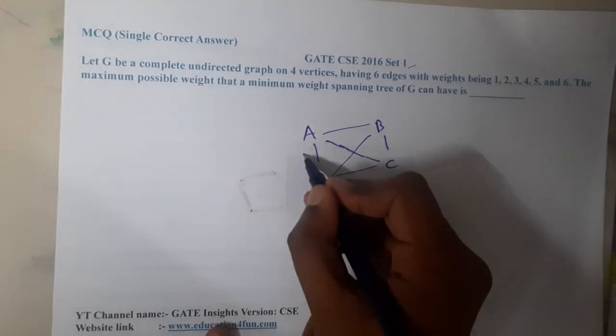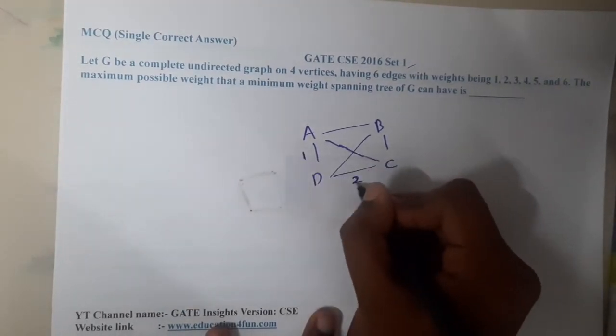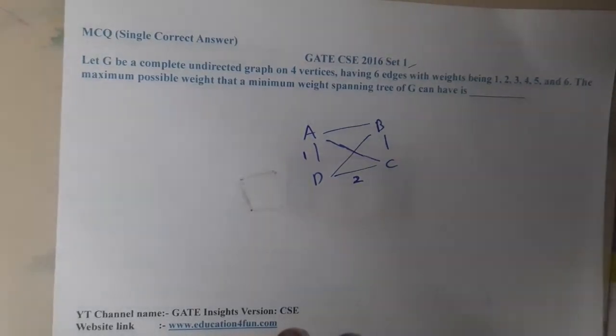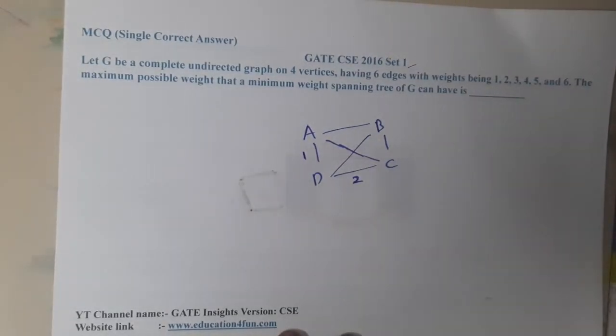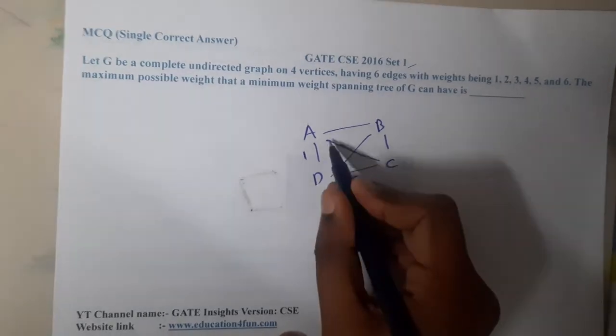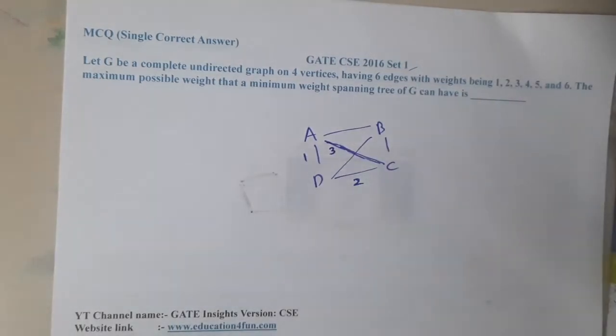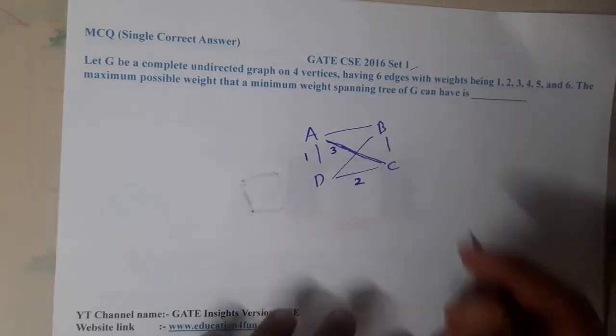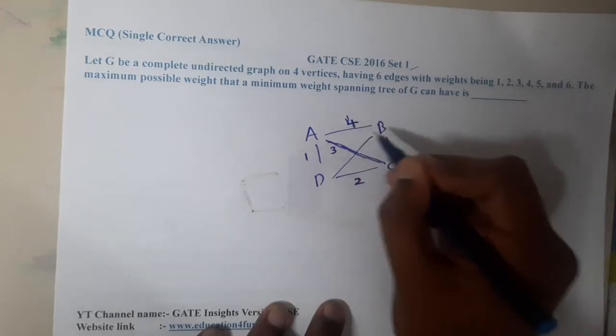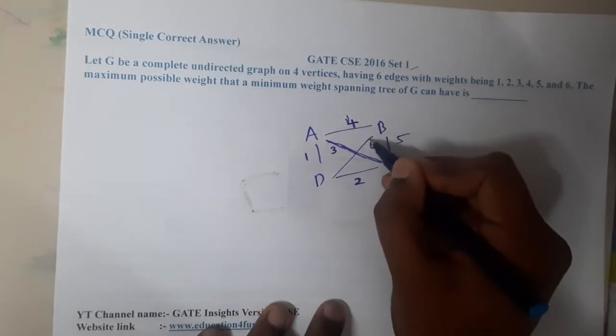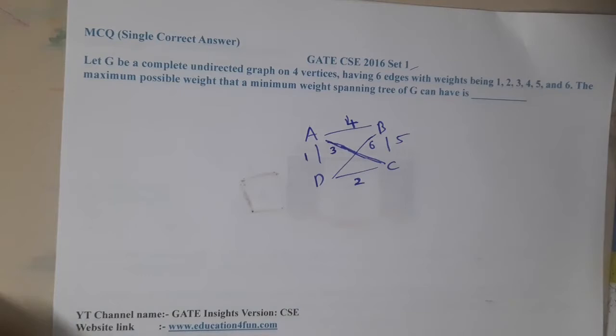Now where exactly will I take three? I will take three in such a case that it is forming a loop so that I can avoid three. If I take this edge as three, and then let us take four here, and if we take five here and six here.